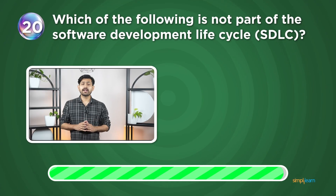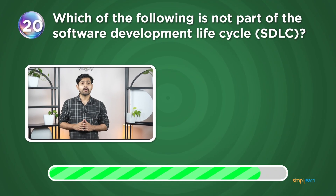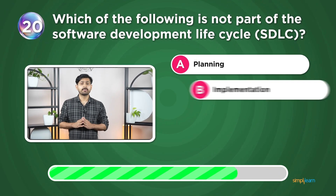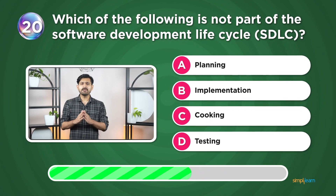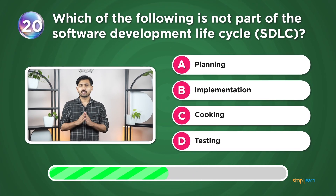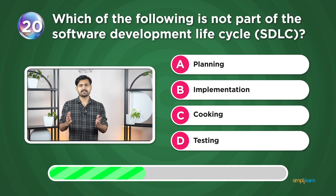Question 20: Which of the following is not a part of the software development life cycle? Planning, implementation, cooking, or testing?